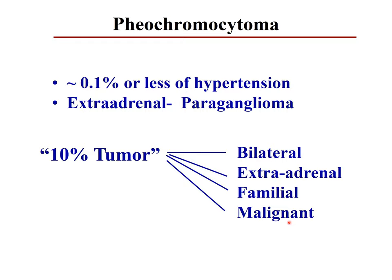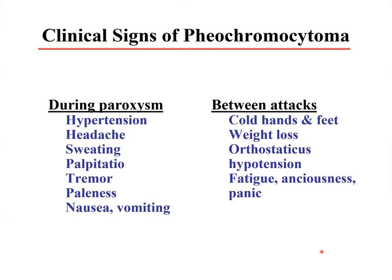Pheochromocytoma releases catecholamines in paroxysms — not continuously — manifesting with very high blood pressure (over 200-250 mmHg); if an aneurysm is present it can rupture easily. Symptoms during attack: headache, sweating, palpitation, tremor, paleness, nausea, and vomiting. Between attacks: cold hands and feet, weight loss, orthostatic hypotension, fatigue, and excess pain.